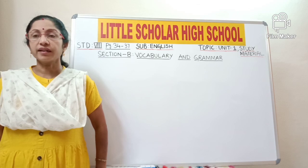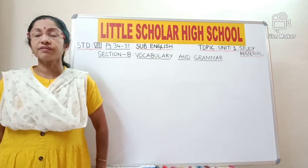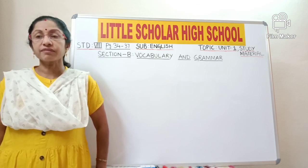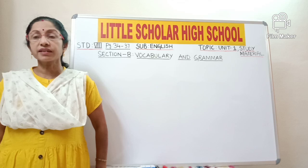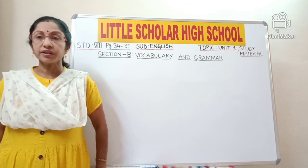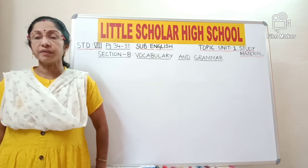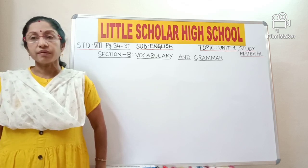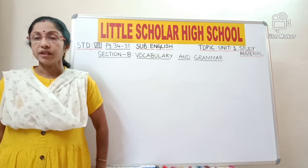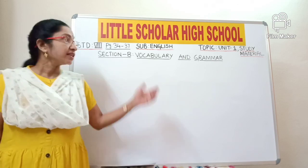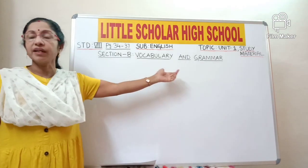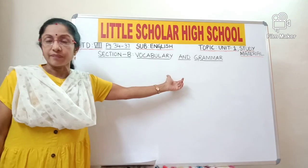Kids, you all know that in the last class we have discussed the passages from the textbook, and we have also discussed the questions and answers based on the textbook and multiple choice questions from the passages. Now let us proceed to the next section B, that is vocabulary and grammar.